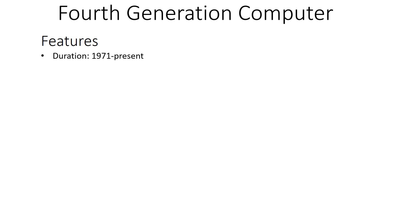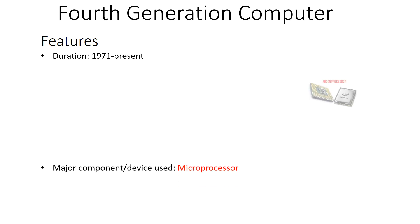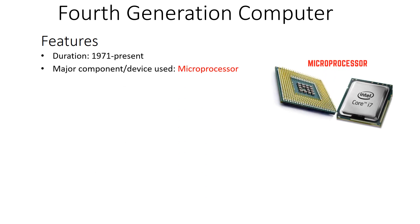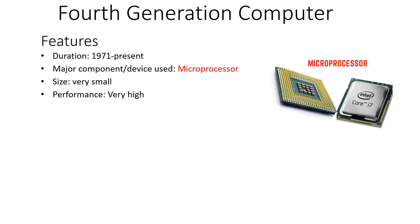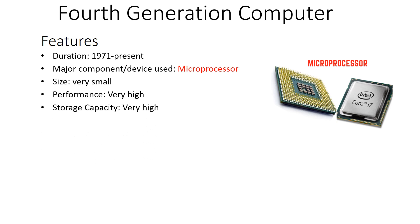The fourth generation computers have a duration of 1971 to the present time. The major electronic component is the microprocessor. The size of this generation is very very small compared to other generations, and performance is very good — they can operate with great speed.